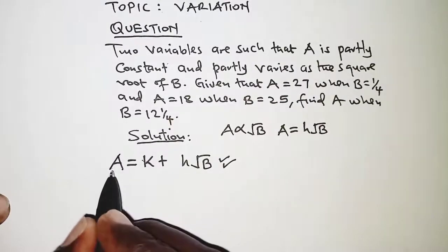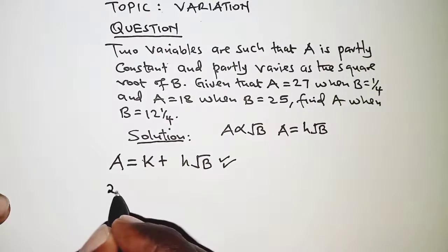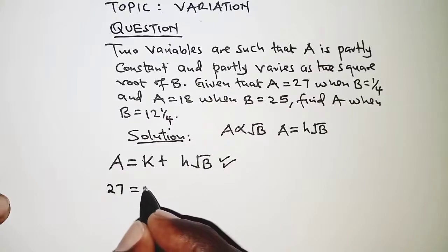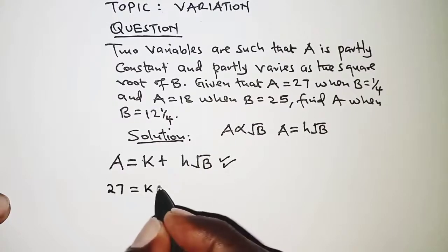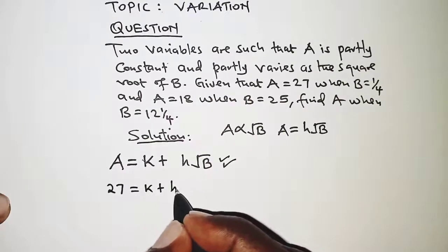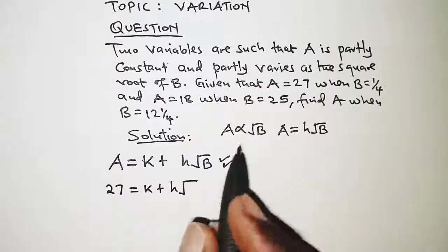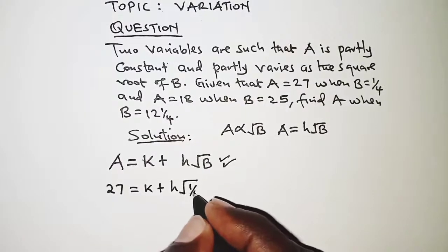In this case we have been given that when A is 27, B is a quarter. We will substitute that. So when A is 27, we have 27 and the constant term is k plus h square root of B, and B we are told is a quarter, so 1 over 4.